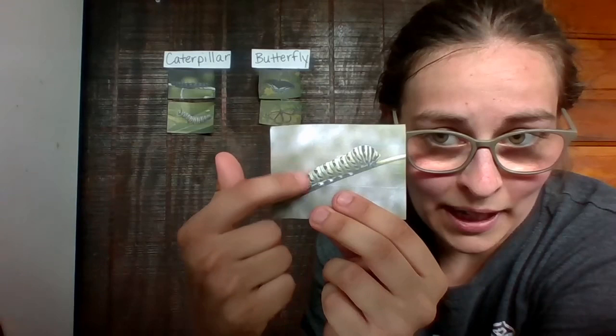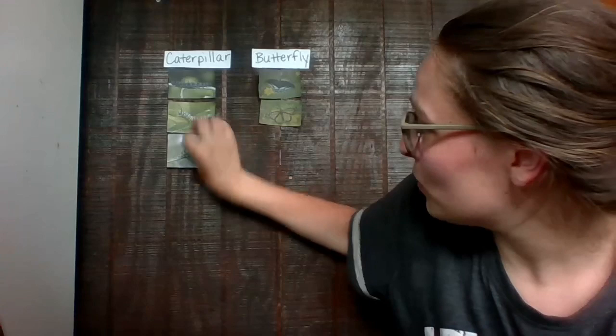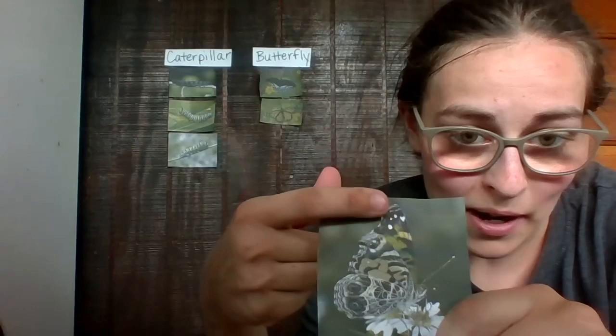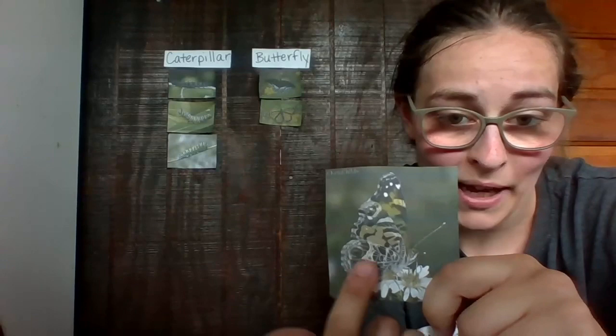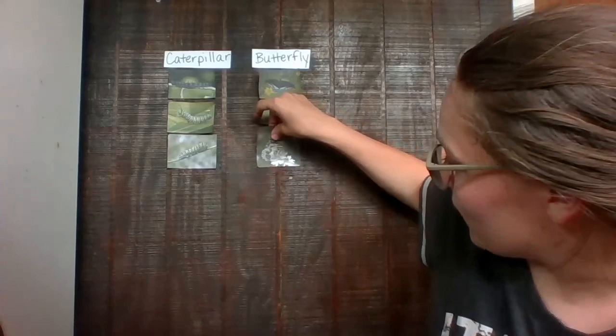A black swallowtail turns into this. So again, it looks a little bit like the monarch. The back does, but the bottom underneath of the black swallowtail has some beautiful designs underneath. So that's how they look very different.